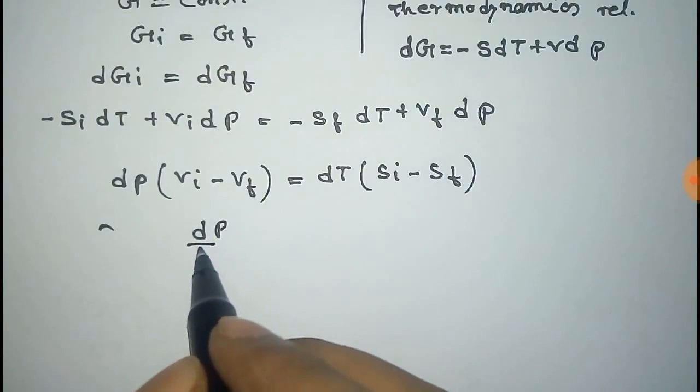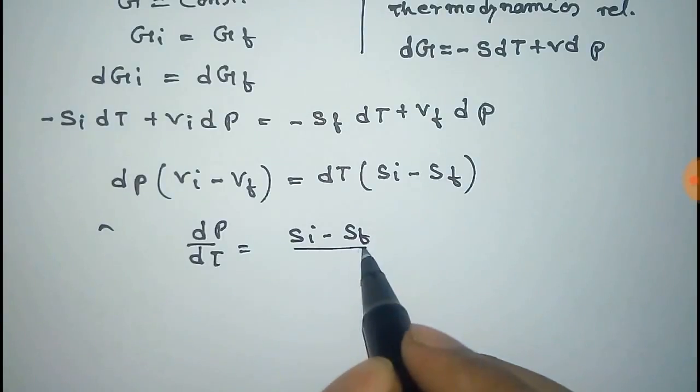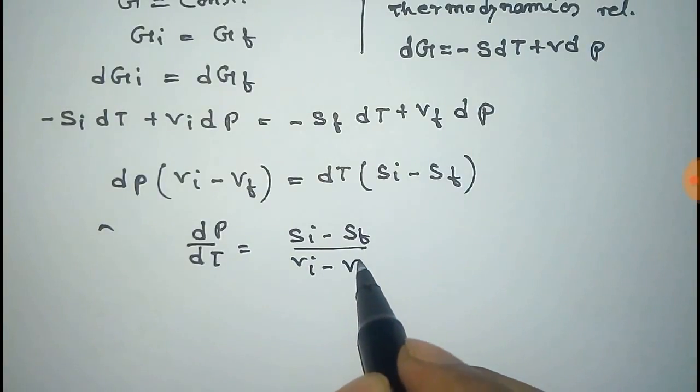Now dP/dT, that is the change of pressure with temperature, is equal to Si minus Sf by Vi minus Vf.